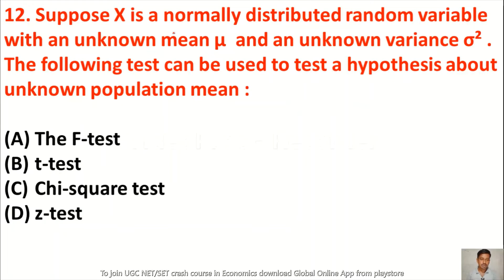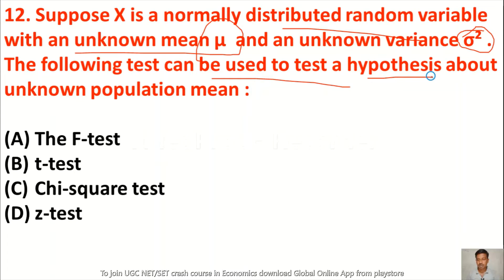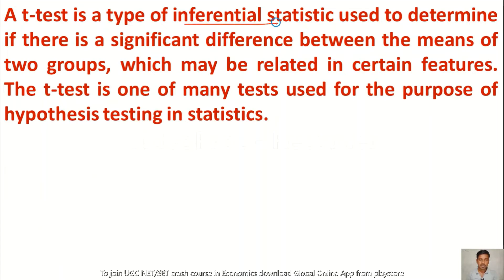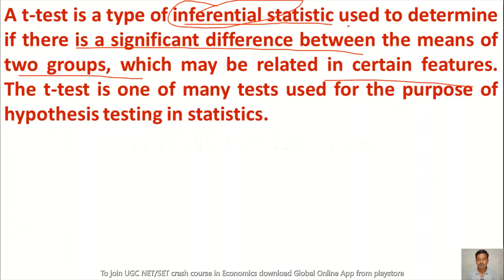Question 12: Suppose x is a normally distributed random variable with an unknown mean and unknown variance σ². The following test can be used to test a hypothesis about the unknown population mean — option A the F-test, option B the T-test, option C chi-square test, option D Z-test. The right answer is option B, the T-test. A T-test is a type of inferential statistics test used to determine if there is a significant difference between the means of two groups, and it is one of many tests used for hypothesis testing.